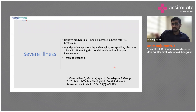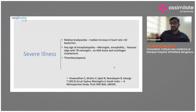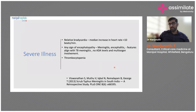Severe illness features include relative bradycardia — the median increase in heart rate is less than 10 beats per minute — and signs of encephalopathy such as meningitis or encephalitis with features aligning with TB meningitis. There will be multi-organ involvement. Unlike TB meningitis where only the brain is involved, scrub typhus causes multi-organ failure.